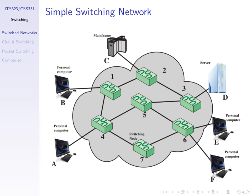That's how we build networks — using intermediate devices called switching nodes that forward the data on. There are two or three different approaches in the way they deliver data when forwarding. We call them switches. Switch 4, for example, receives data from A and may send it to switch 1, switch 5, or switch 7. When it decides, it's like a switch — it either goes this direction, or we switch to another direction. We choose between one of those possible output links.